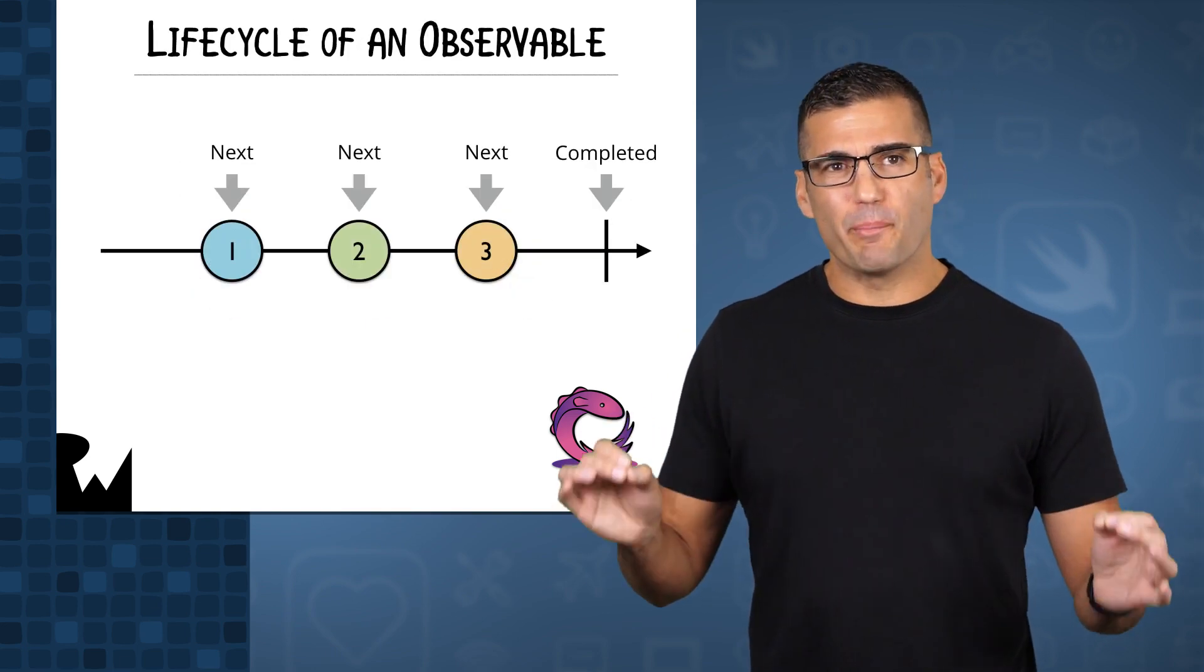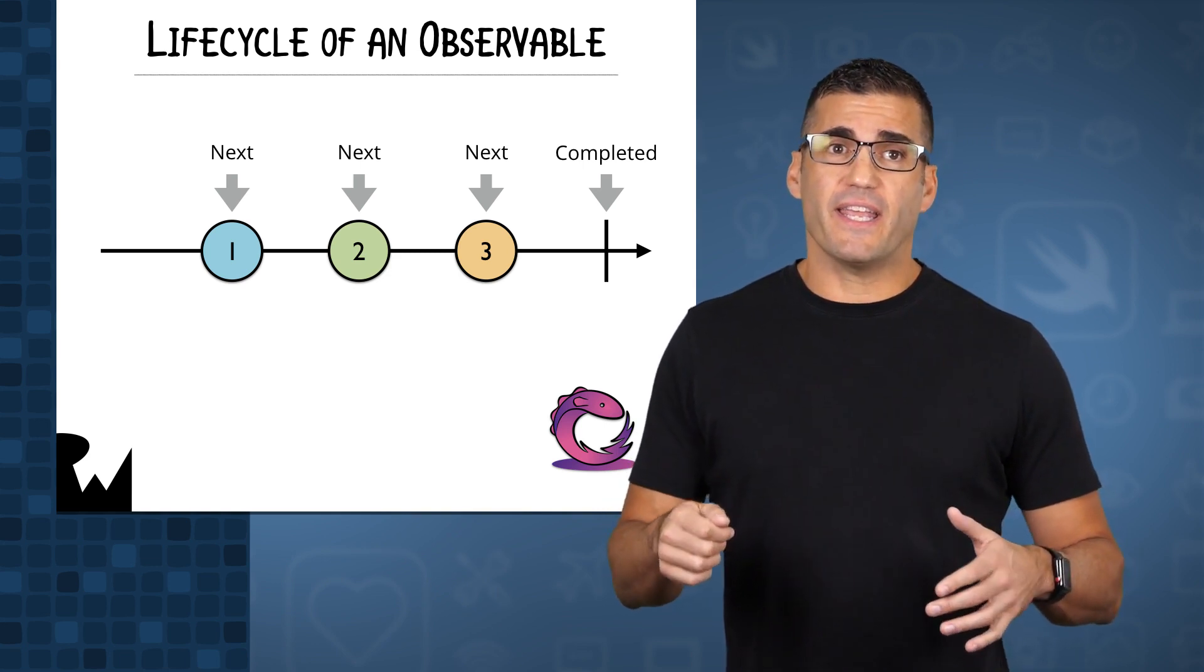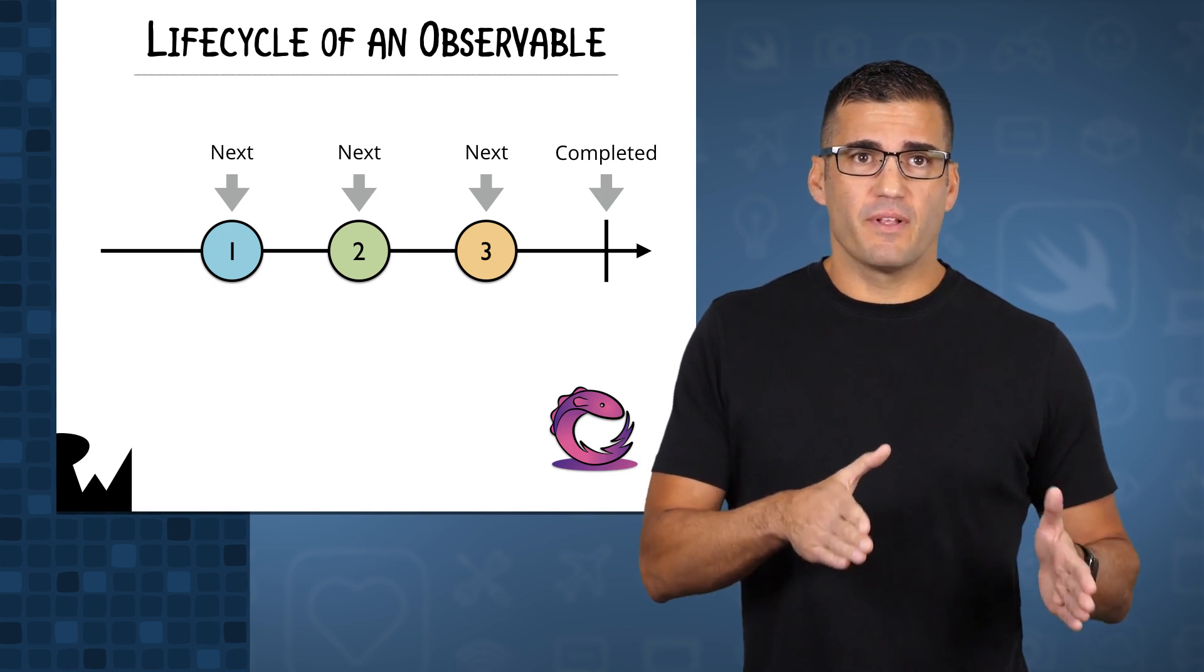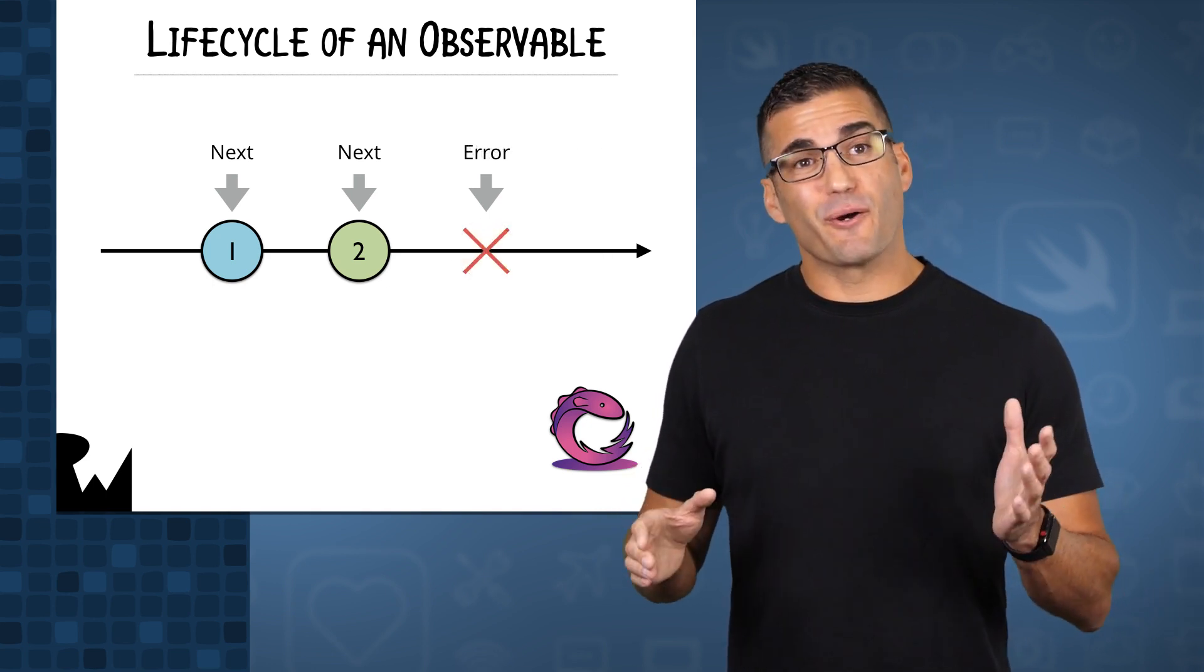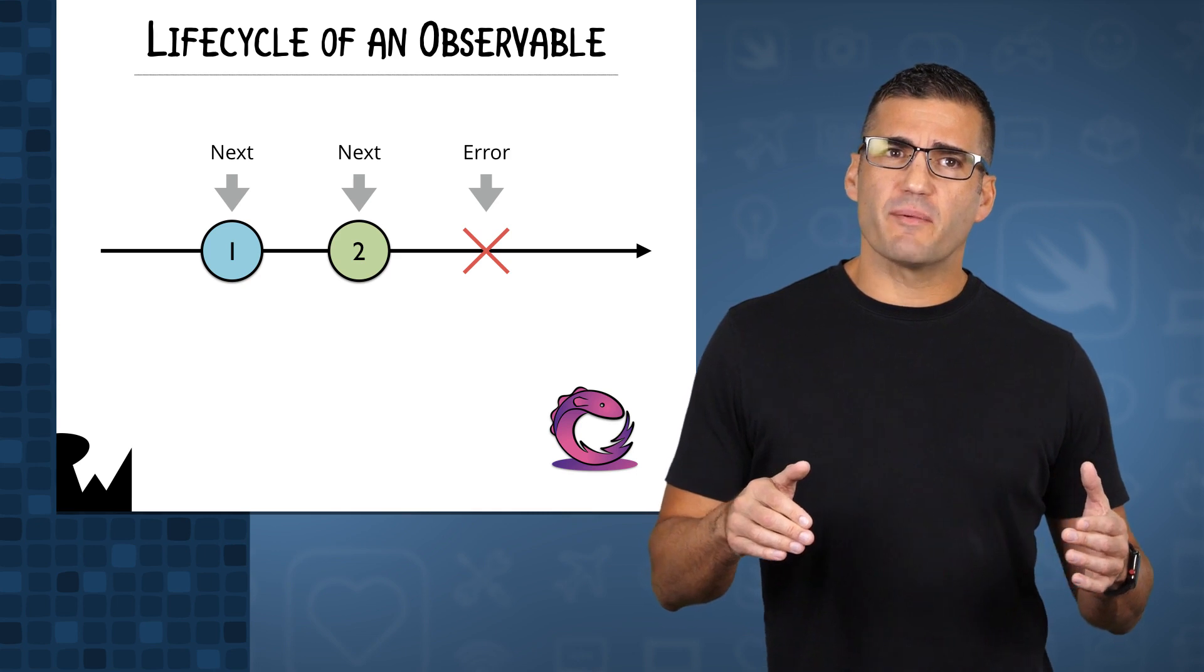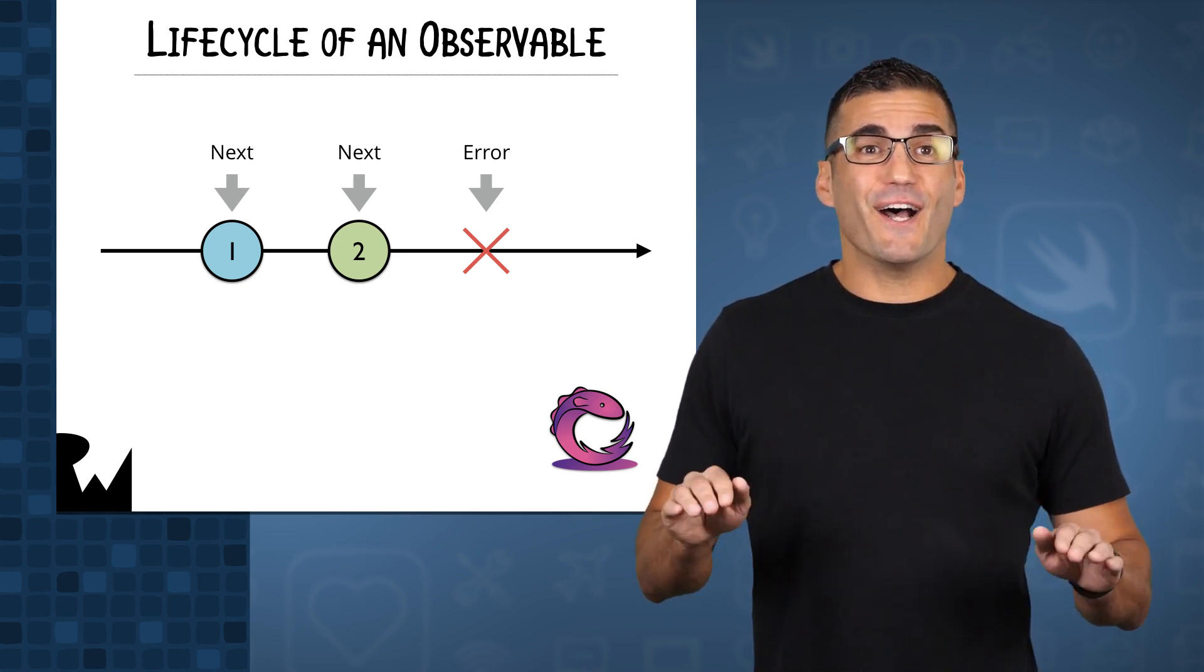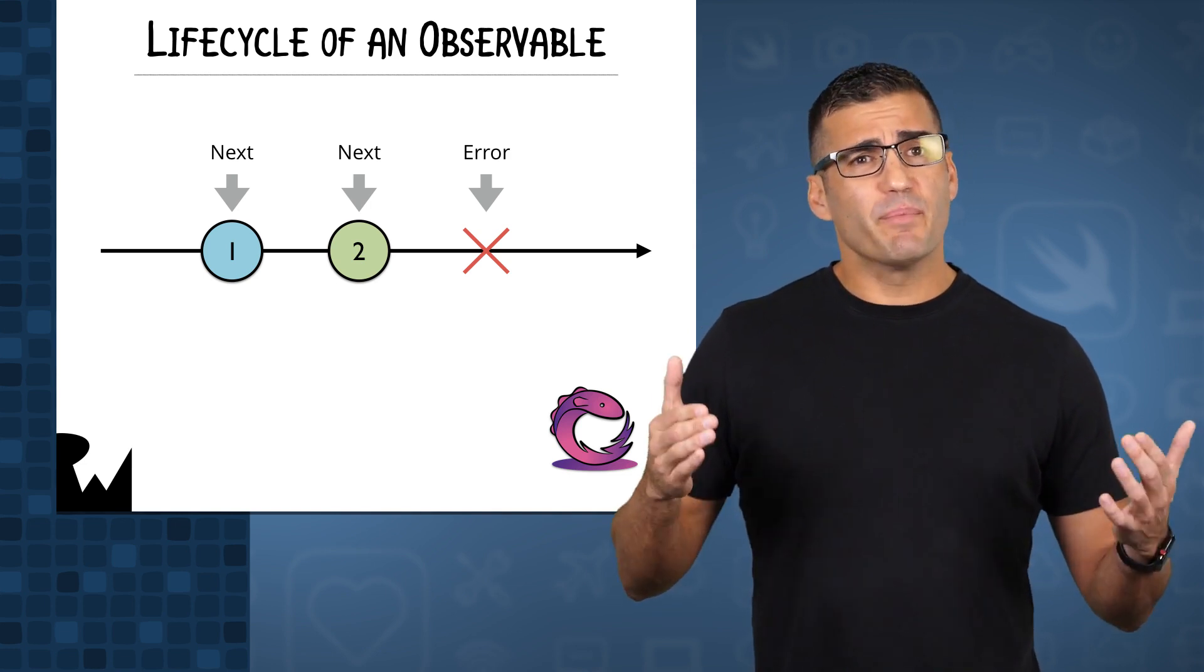So, let me explain that a little better. An observable can emit a next event containing an element. And when the observable is done, it emits a completed event. This is considered normal termination. However, sometimes things can go wrong. And when that happens, an observable will emit an error event. This also terminates the observable. An observable can only emit one error event and it's done, and can no longer emit any more events, just like when it emits a completed event.